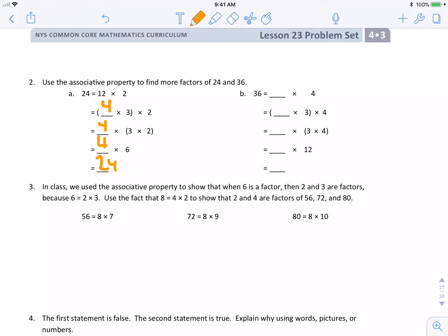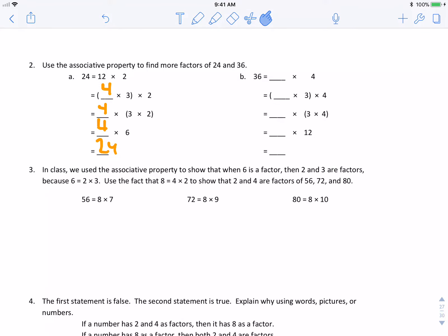We're going to use the associative property to find more factors of 24 and 36. So, what times 3 equals 12? Go ahead and do the other one. In class, we use the associative property to show that when 6 is a factor, then 2 and 3 are factors because 6 equals 2 times 3. Use the fact that 8 equals 4 times 2 to show that 2 and 4 are factors of 56, 72, and 80.